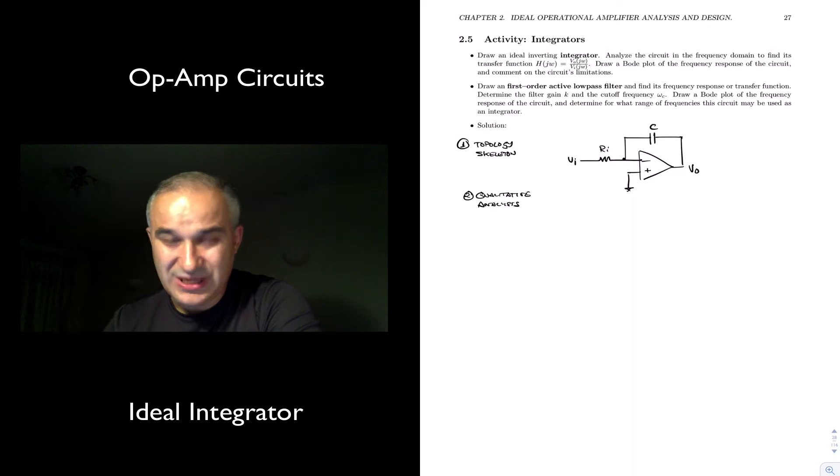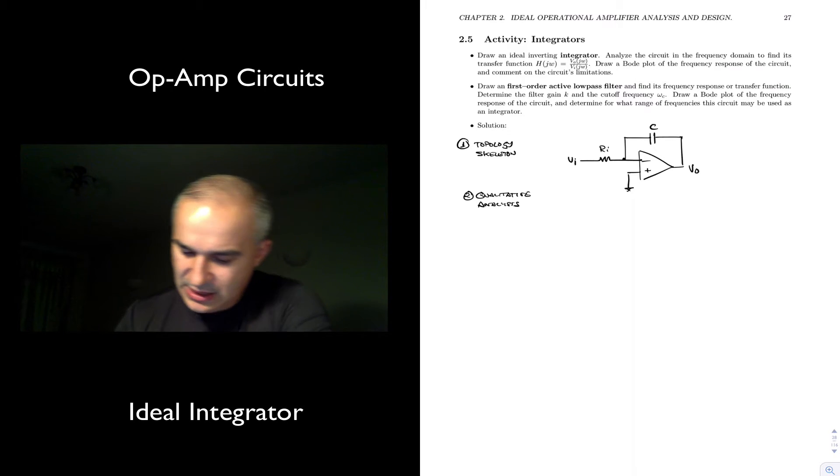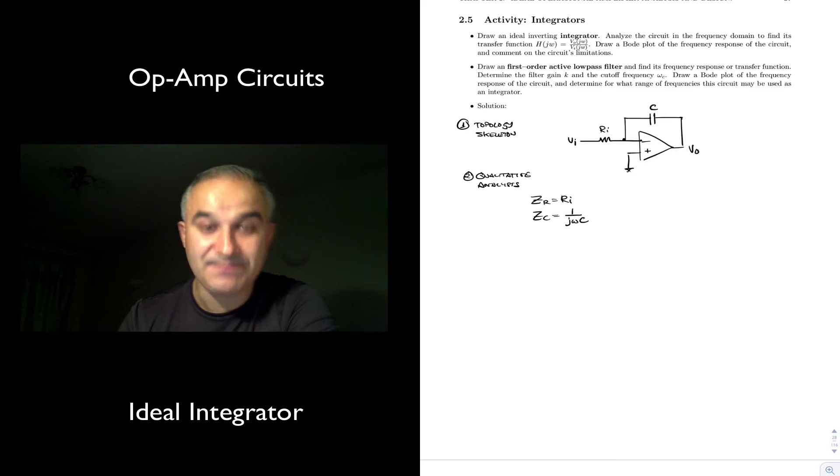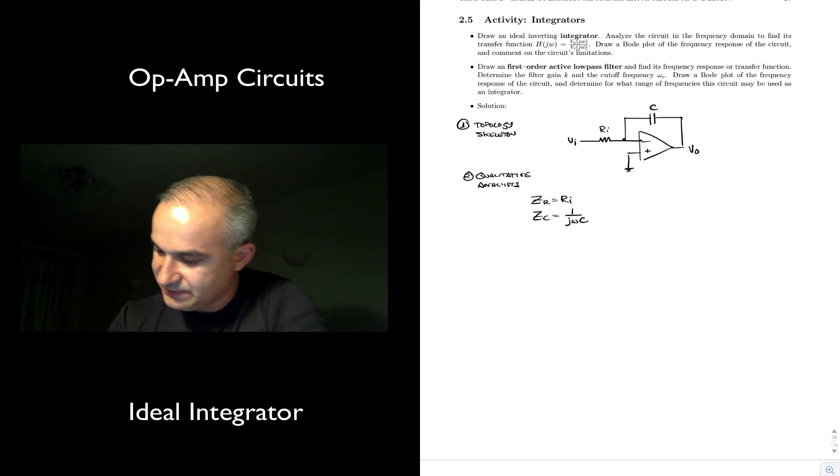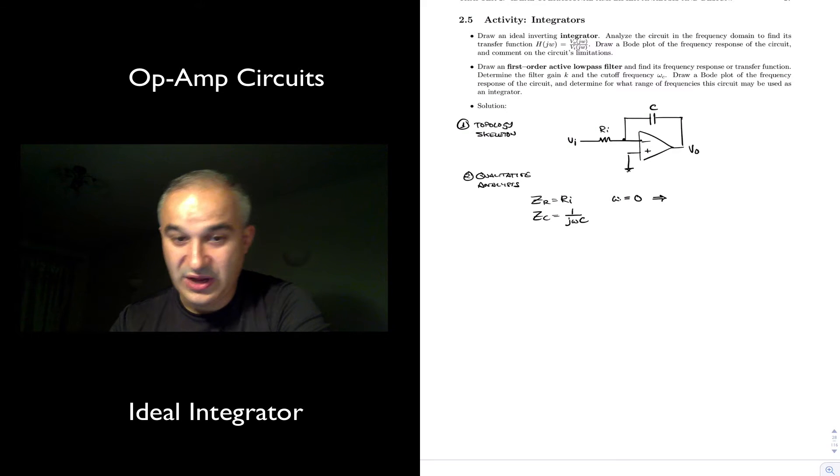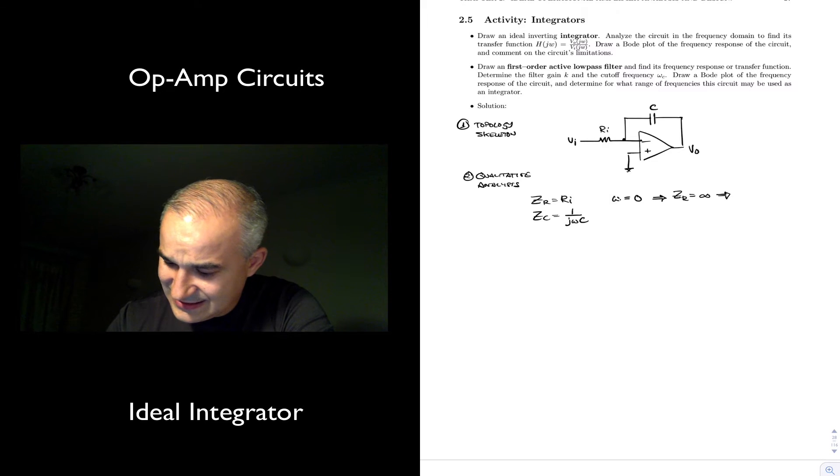Let's look at what a capacitor does as a function of frequency. This is a circuit that is going to be frequency-dependent. We know that the impedance of a resistor is not frequency-dependent, but the impedance of a capacitor is 1 over j omega C. So what's going to happen at low frequencies and at high frequencies? When omega is equal to 0, at very low frequencies, we have 1 over j omega C. What's going to happen to the impedance of the capacitor? The impedance is infinity.